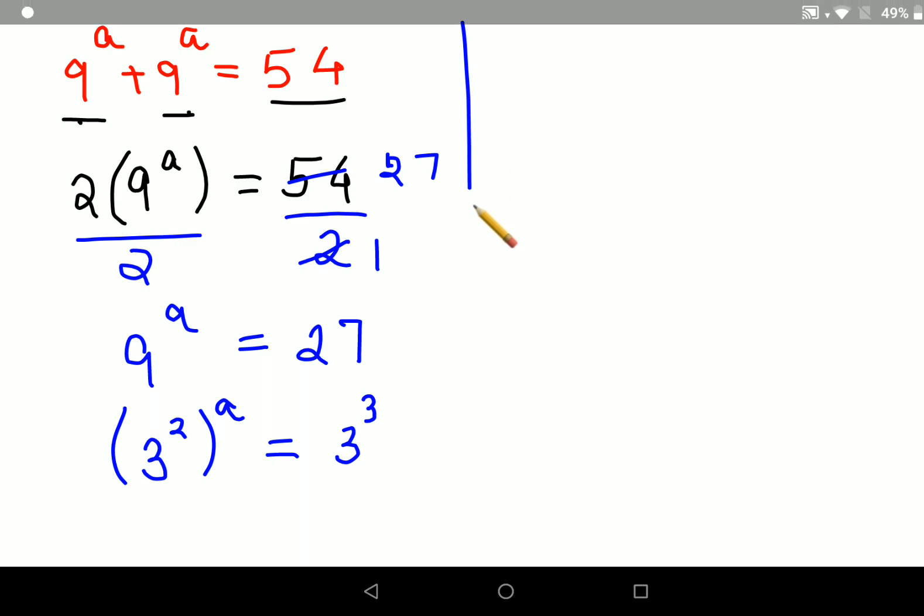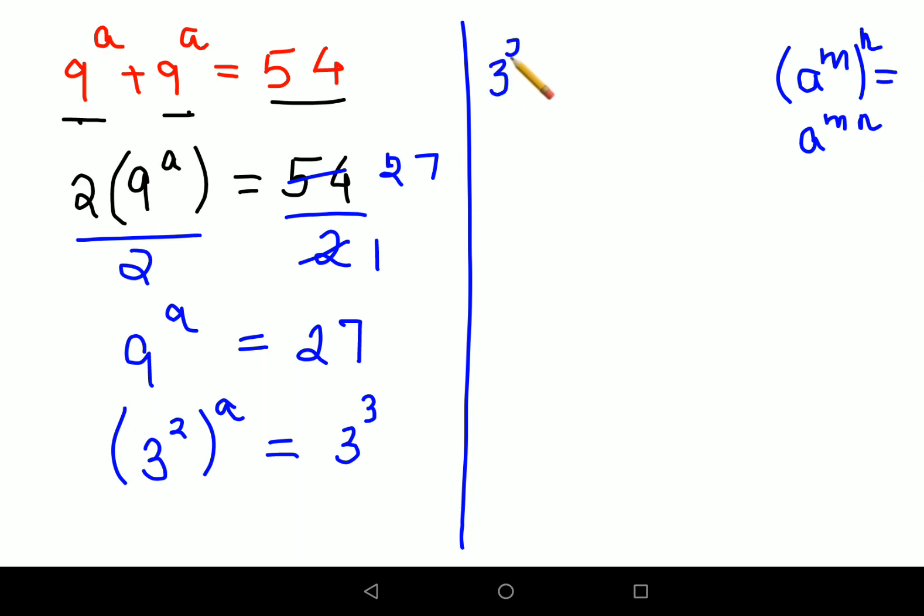Okay. Now there is a law in indices when there is an index raised to another index, the indices get multiplied. So this will be written as 3 raised to 2a equals to 3 raised to 3.